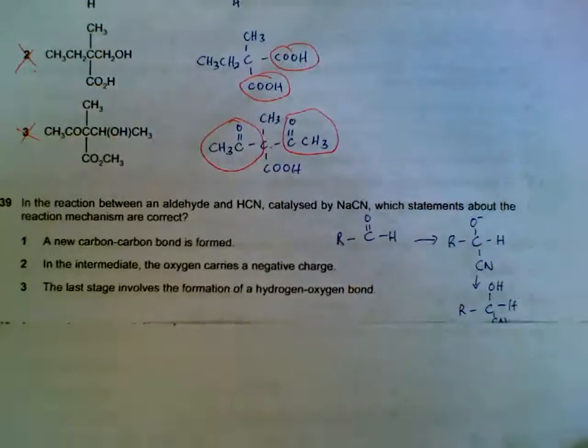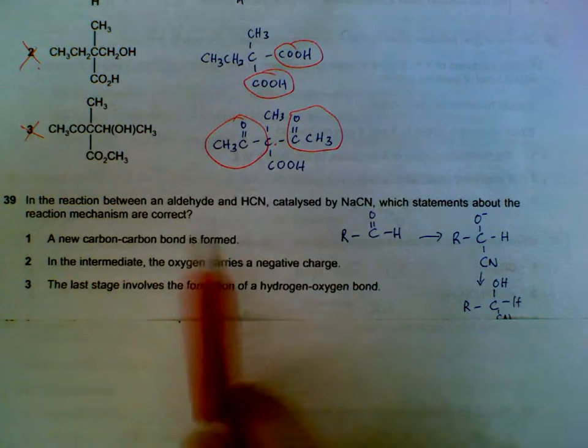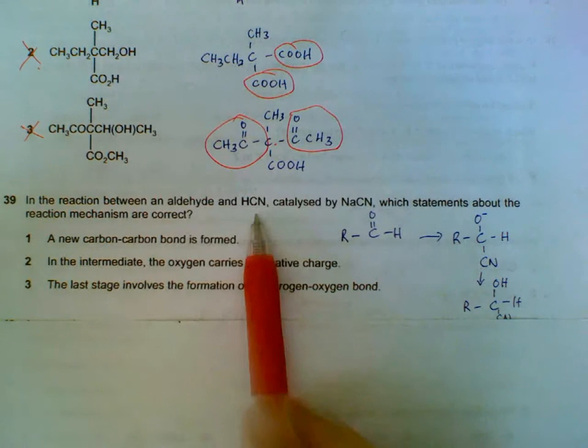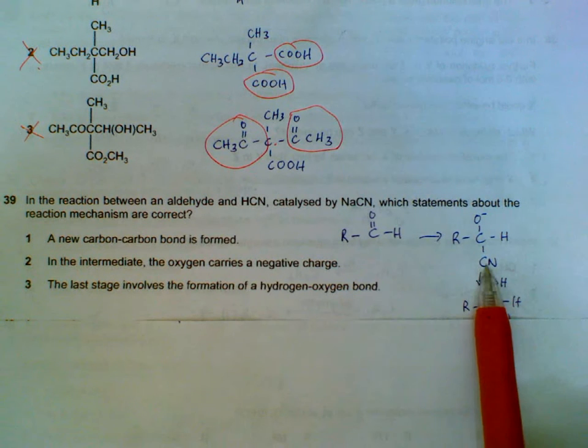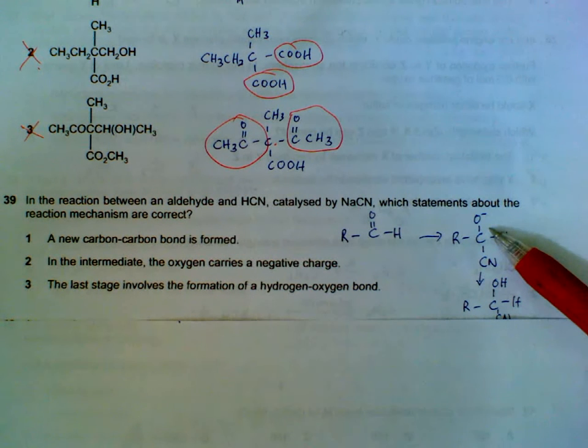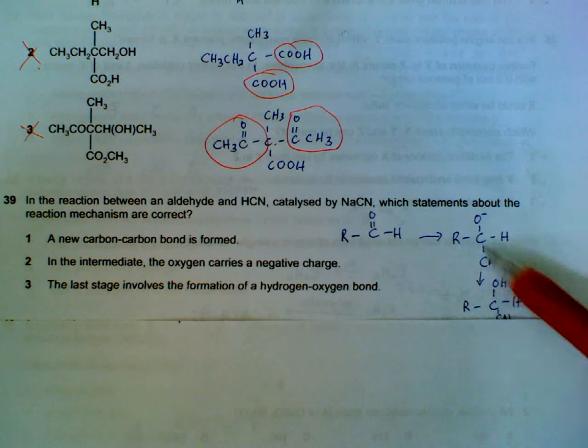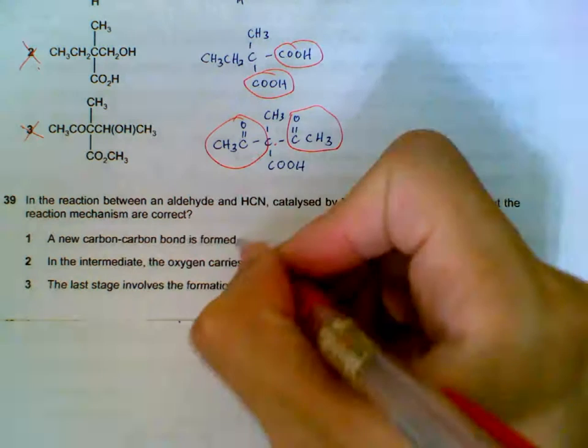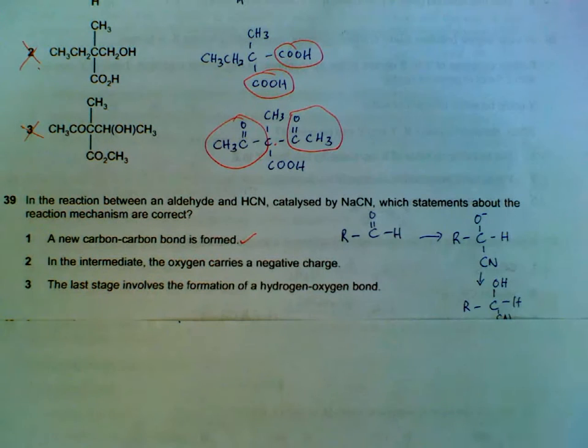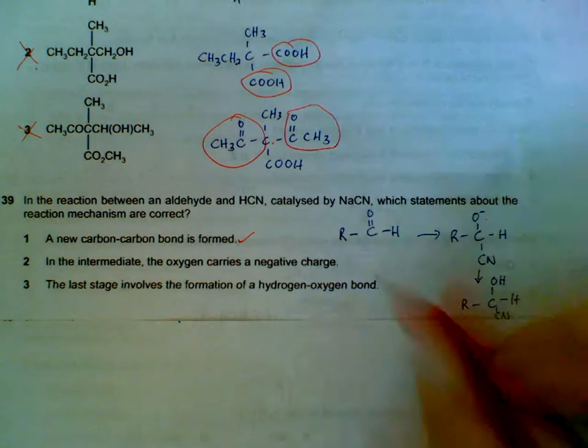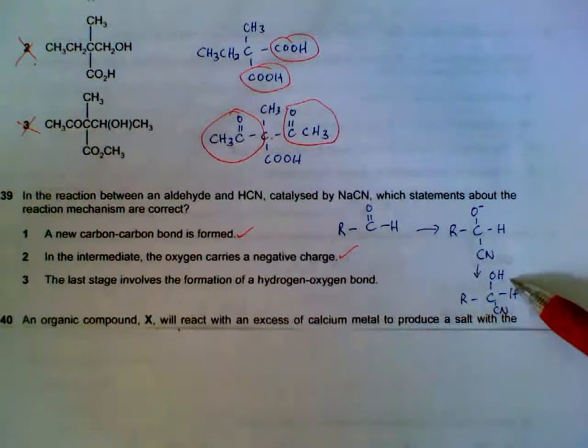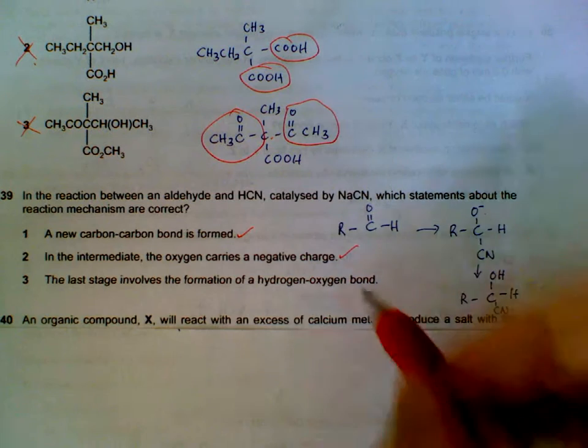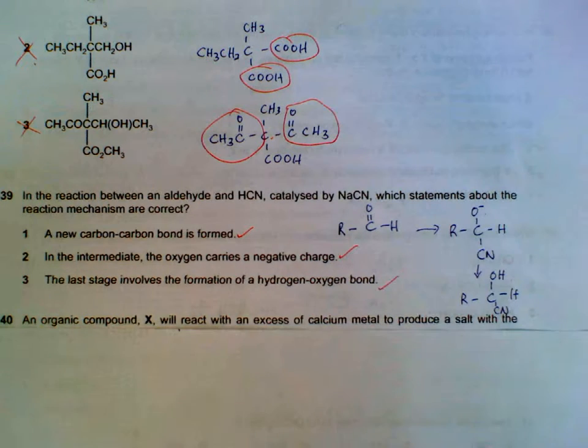Number 39. We have an aldehyde and HCN. What happens is the CN will join to this carbon here, forming this intermediate. So we have a new carbon-carbon bond forming. Statement 1 is correct. The intermediate will have a negative charge. And then finally we will form our cyanohydrin. The OH bond will be formed. So all three statements are correct.